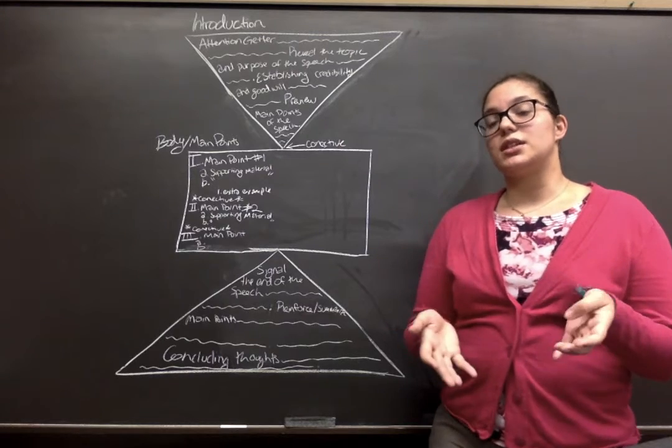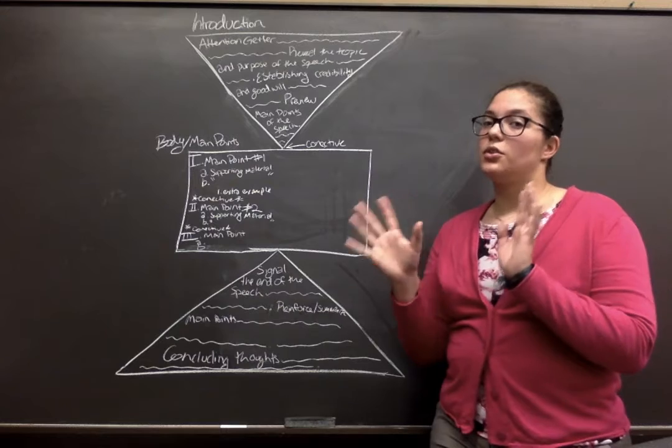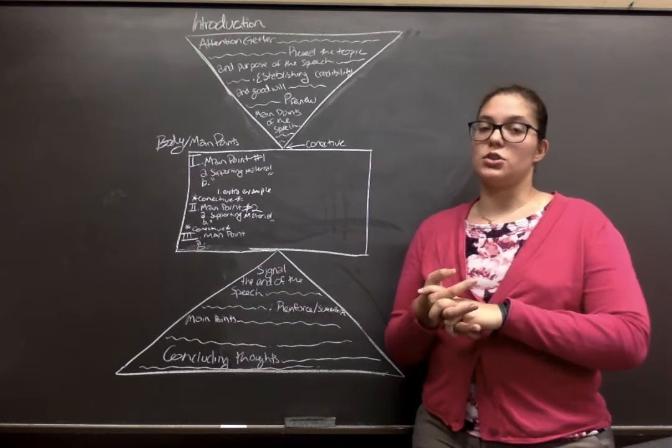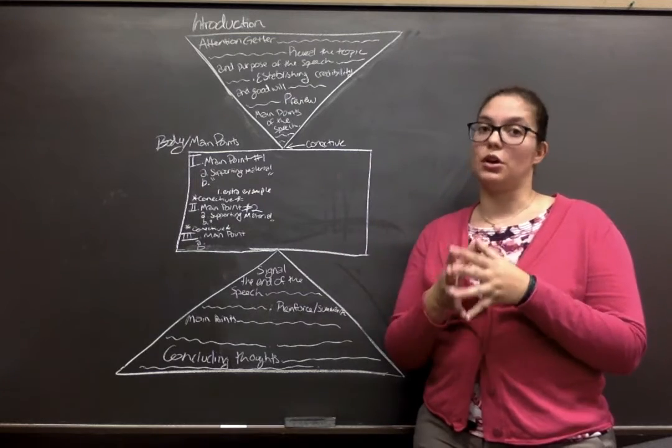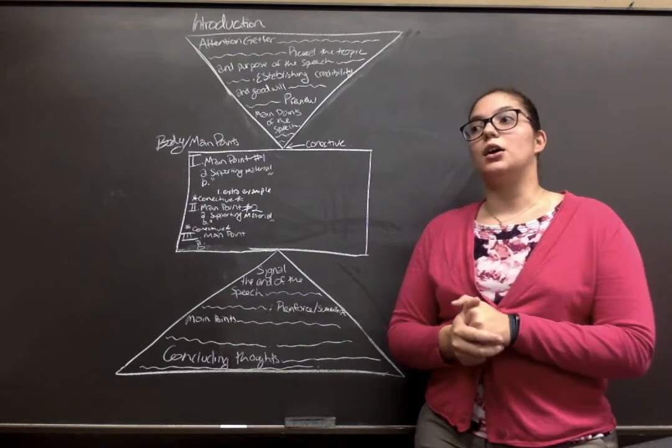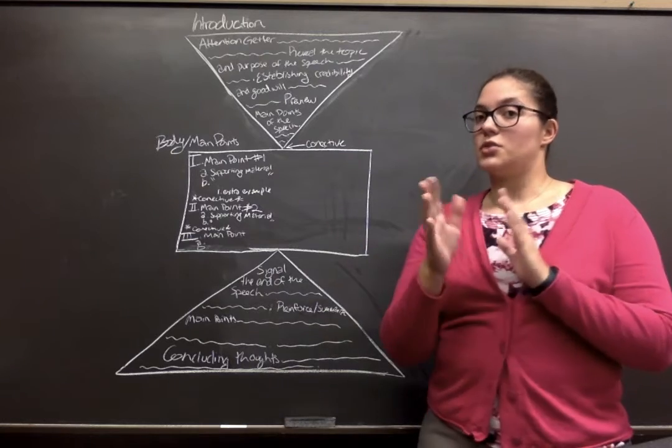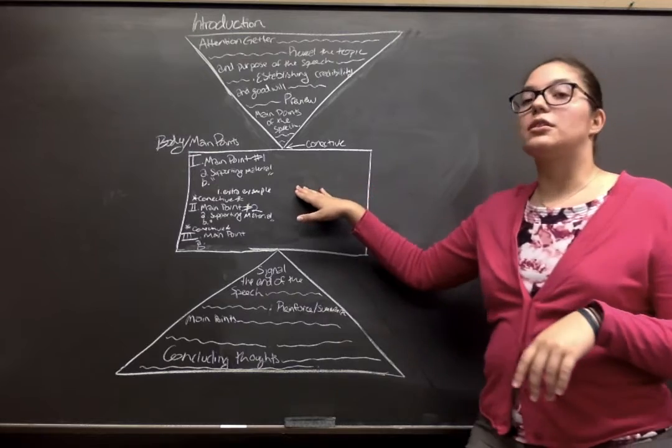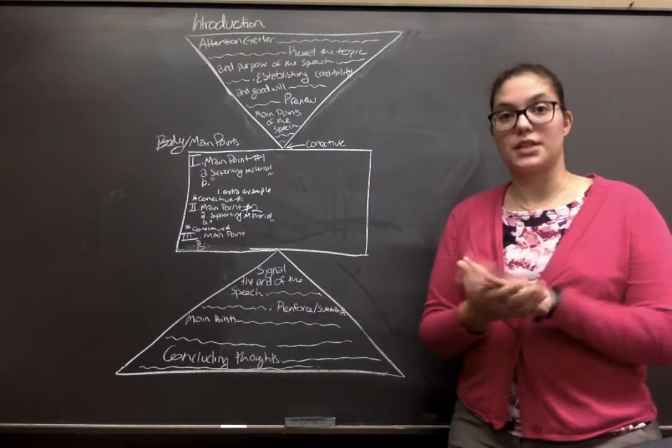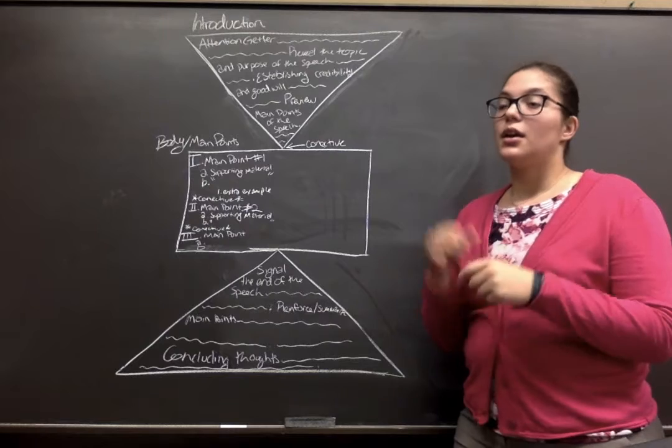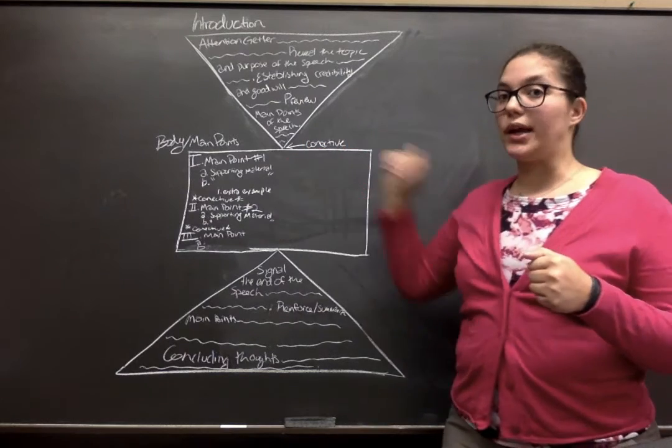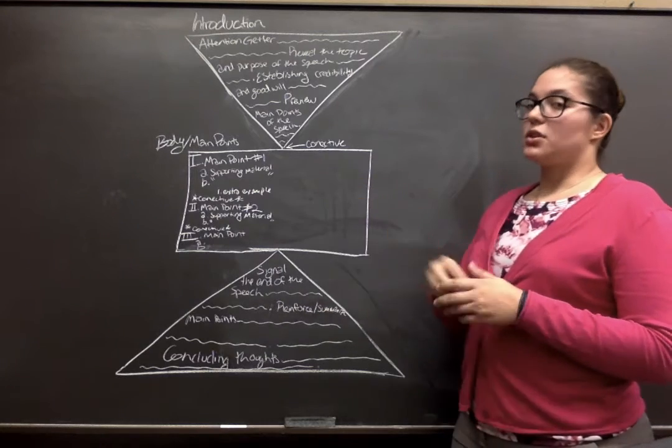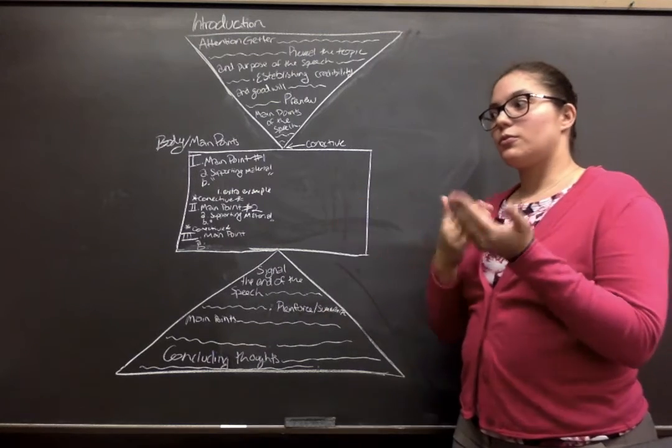If you're going to use statistics, brush up on what the fancy math words that they use. So mean, median, mode. Occasionally you'll see a bell curve. You should know what a bell curve is. We can talk about that at a later date if you want. And then have another supporting material and then possibly an extra example to further support your main point. These all should relate back to your main point. Try not to go off on tangents to keep your speech concise and followable.